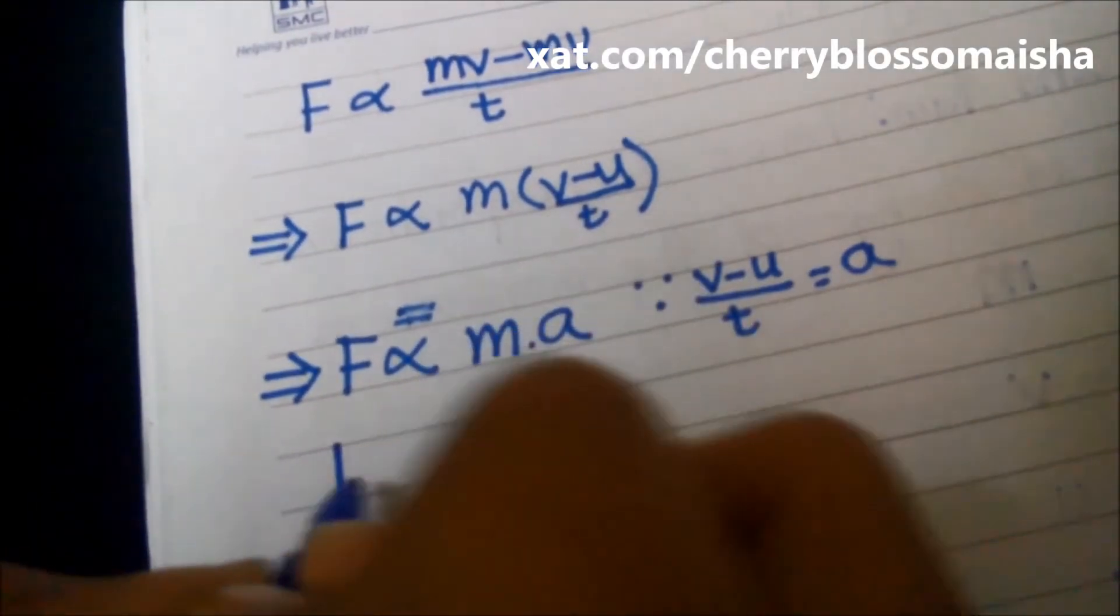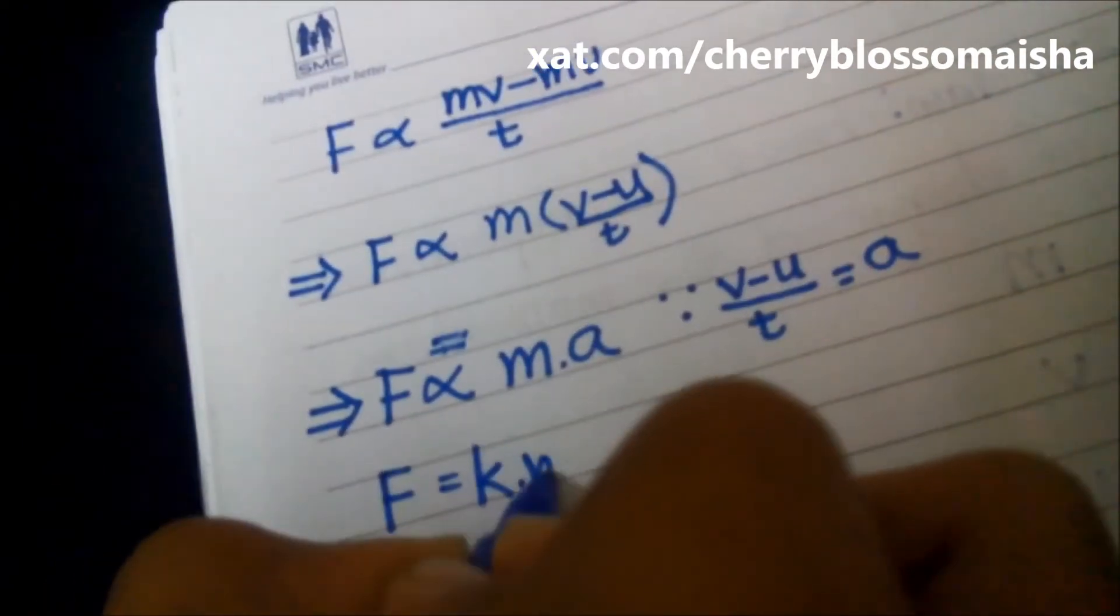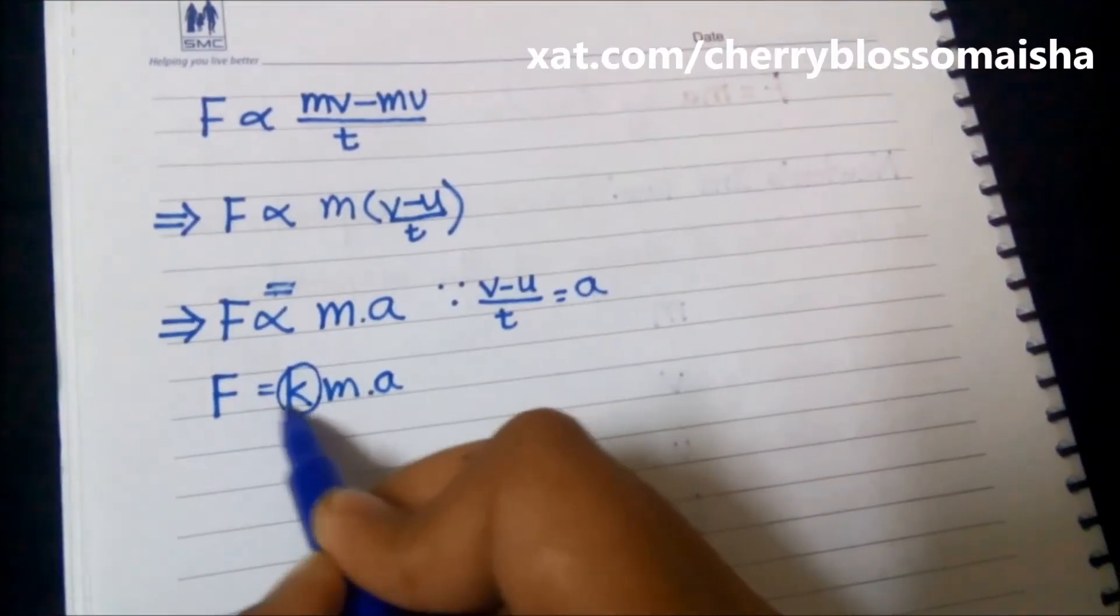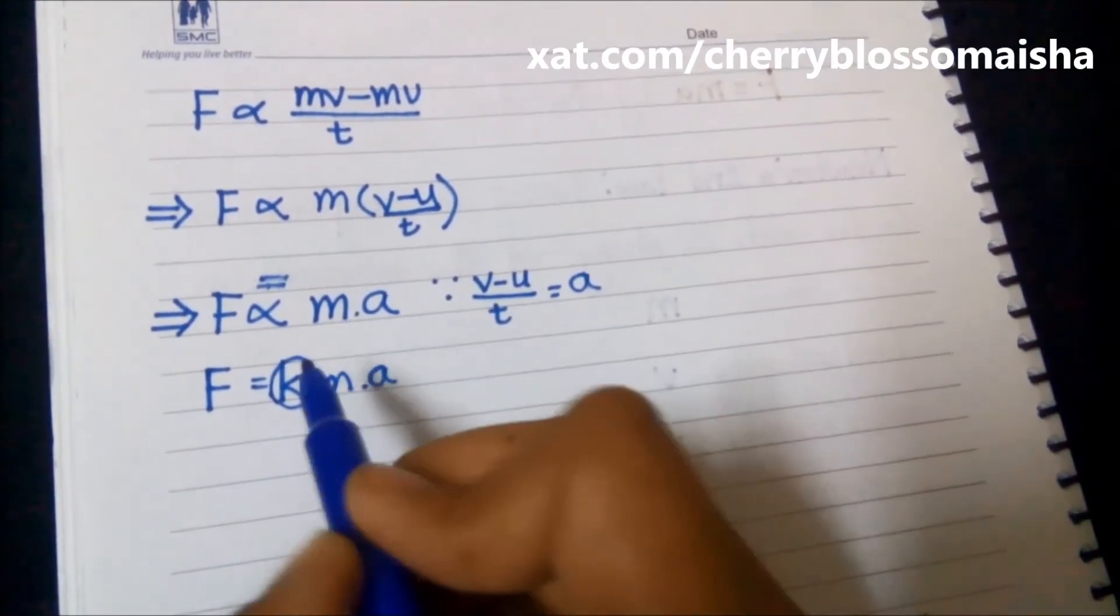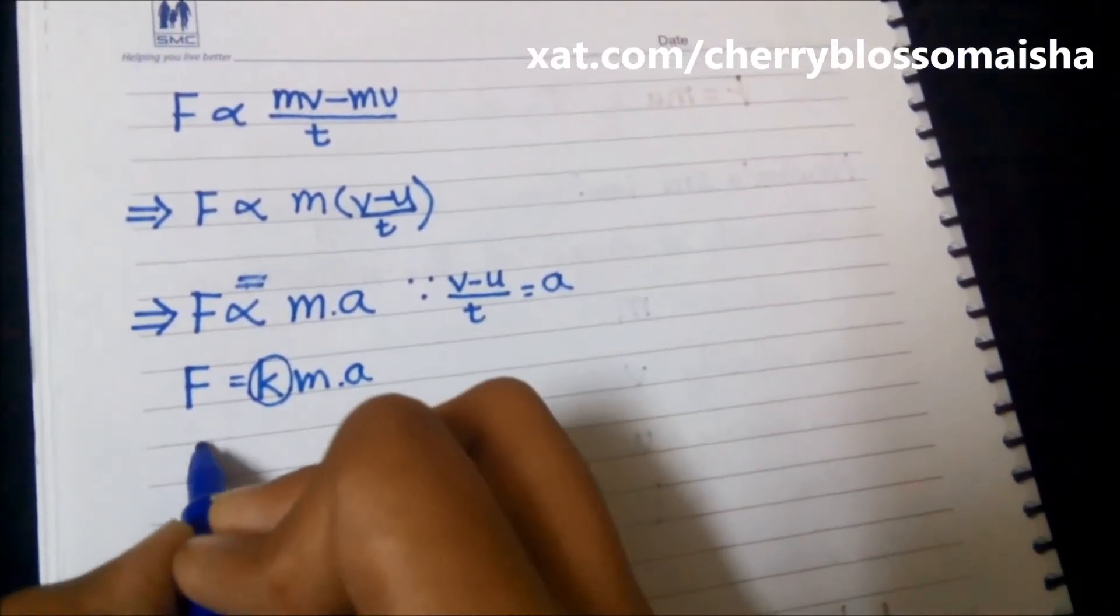So let's imagine that the constant is K. So F is equal to K into M into a. So now we have to remove this K constant. So how will we remove this?